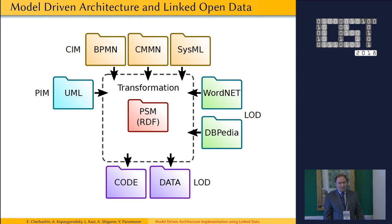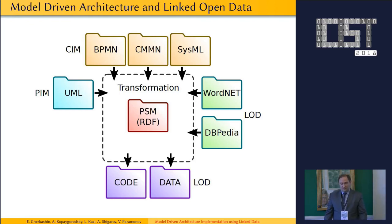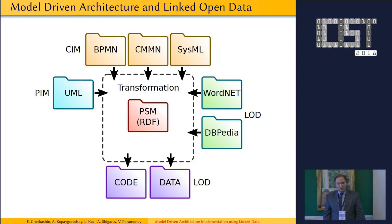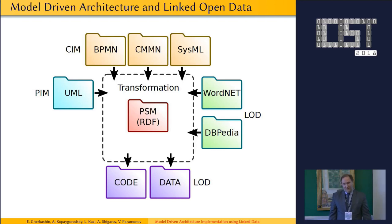This is the common model of our approach. We have a computation-independent model, a platform-independent model presented in UML language, and we transform this to code and data applying T-Box and A-Box meanings from linked open data. As for the knowledge base, currently we use DBpedia, but it is also possible to use other sources like Yahoo, FAI, and so on.